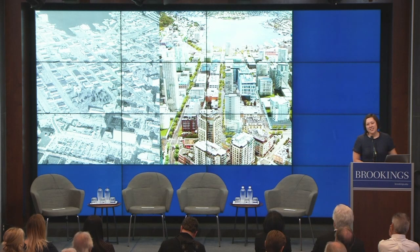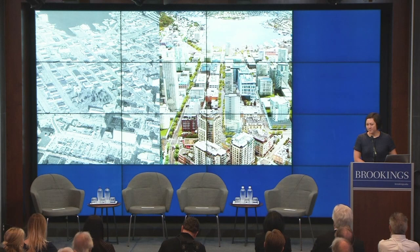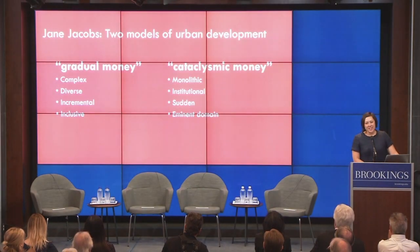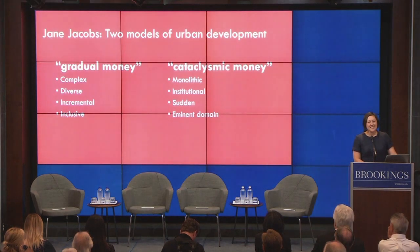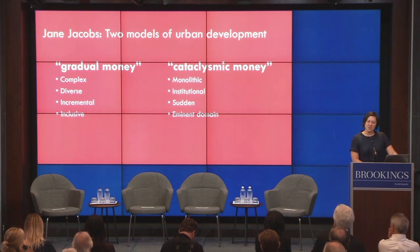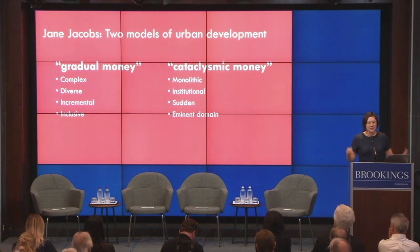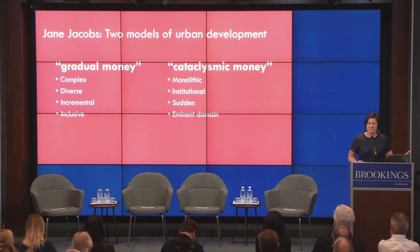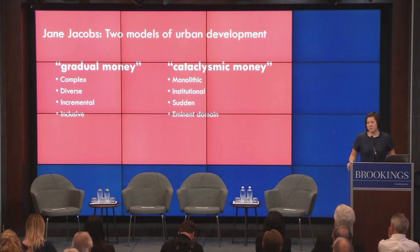When we're talking about catalytic development, we're talking about a dramatic transformation. Jane Jacobs in her famous book The Life and Death of Great American Cities identified two models of urban development. One was what she called gradual money, characterized by a lot of the best practices we're hearing about in city building today — mixed use and incremental — and one was cataclysmic money.